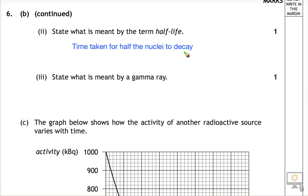So definitely the time taken for half the nuclei to decay or the time taken for the activity of a source, which is the number of decays per second, to decrease by half. And both of those will be perfectly good.